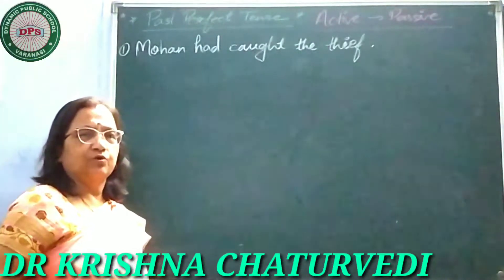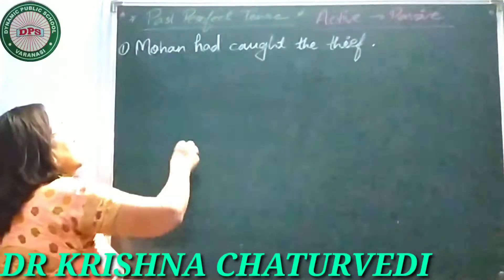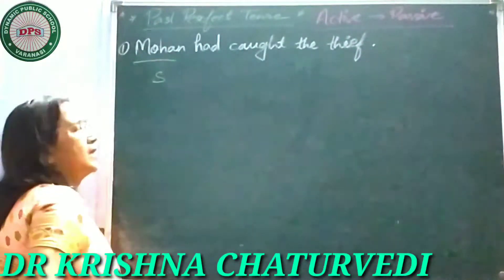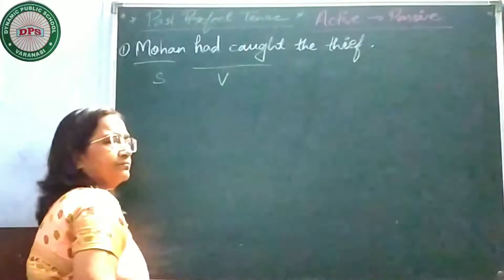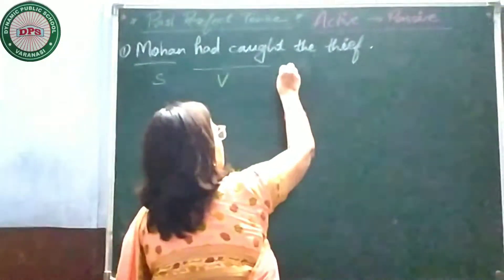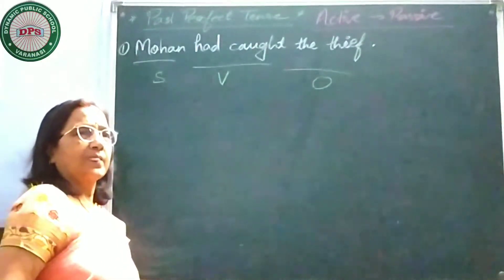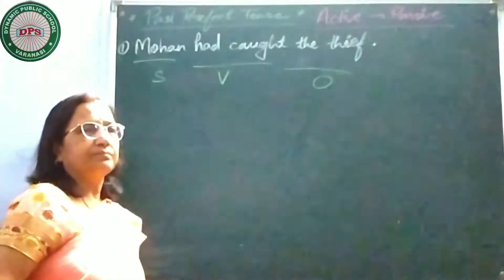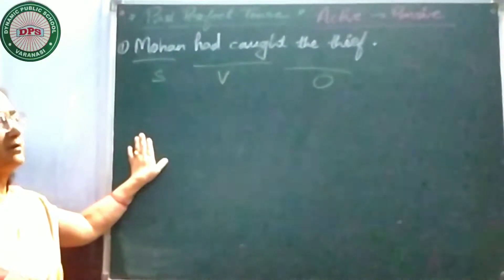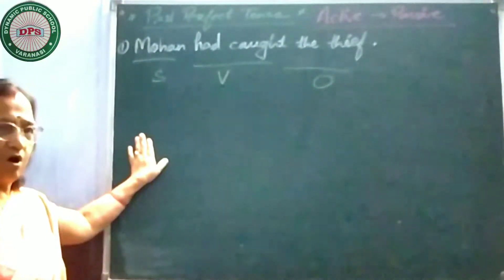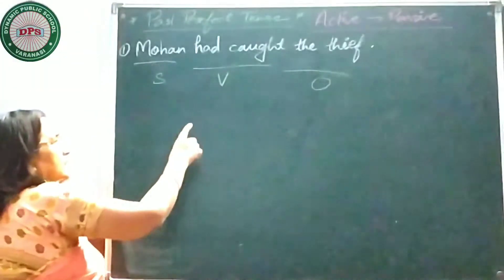Mohan ne chor ko pakar liya tha. Who is the subject? Mohan is the subject, 'had' is the helping verb, and 'caught' is the principal verb. 'The thief' is the object. Now first of all you have to bring the object here as the subject of passive voice — 'the thief.'